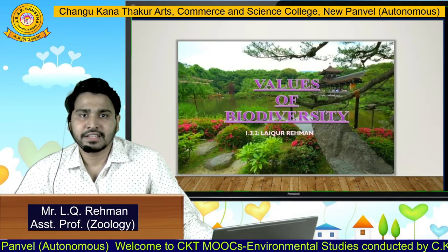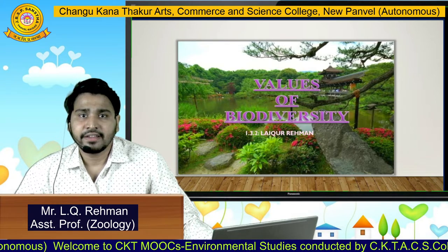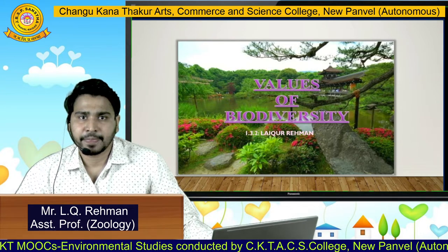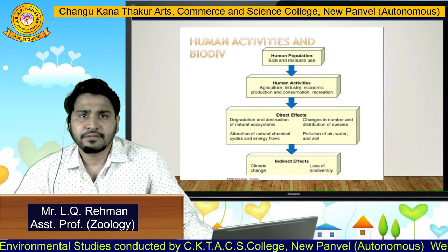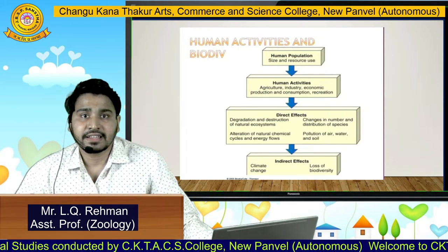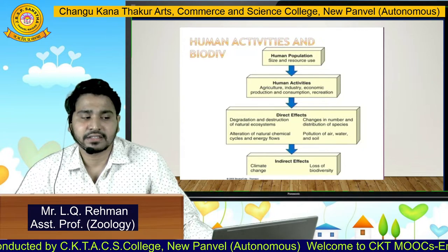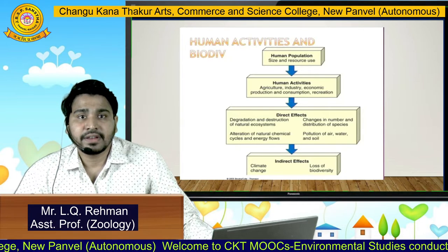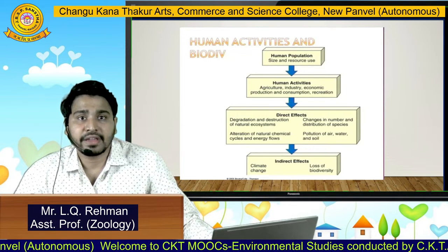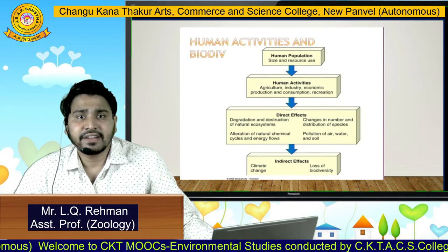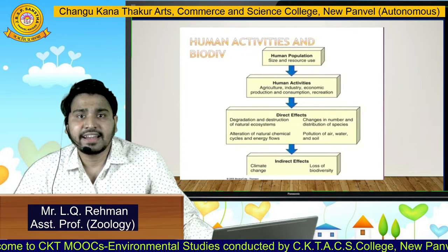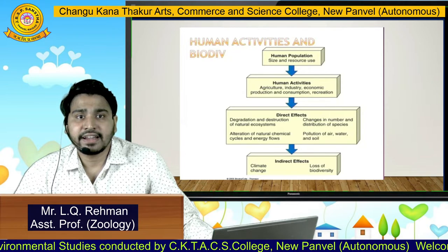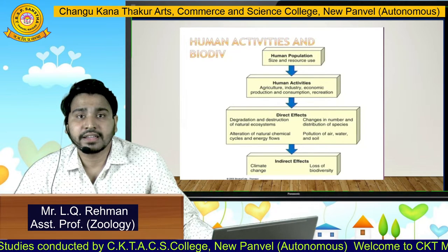Welcome back, myself Laikur Rahman. Today we are going to study a new topic: values of biodiversity. This is a flowchart of human activities and biodiversity which are related to each other. The first is human population, size and resources used, and human activities such as agriculture, economic, and industry activities. These activities have direct effects and indirect effects, and in this video lecture we will see what they are and how they affect biodiversity.